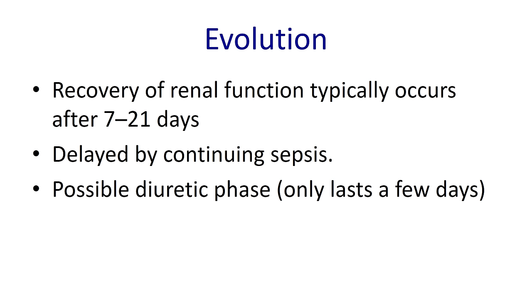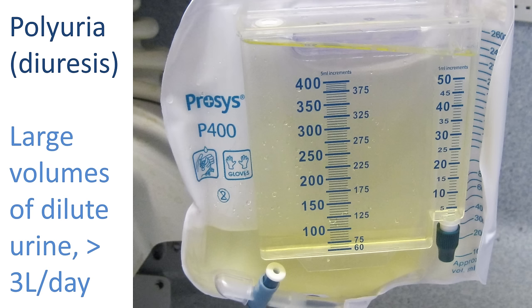As the condition starts to resolve, there is often a diuretic phase. A diuresis is an increase in the volume of urine produced — the patient can go from being oliguric to being polyuric quite quickly. This diuretic phase can last for a few days. What happens is that glomerular filtration can return, but tubular reabsorption is still inhibited, so the patient can start producing large volumes of very dilute urine. We define a polyuria or diuresis as greater than three litres of urine per day.